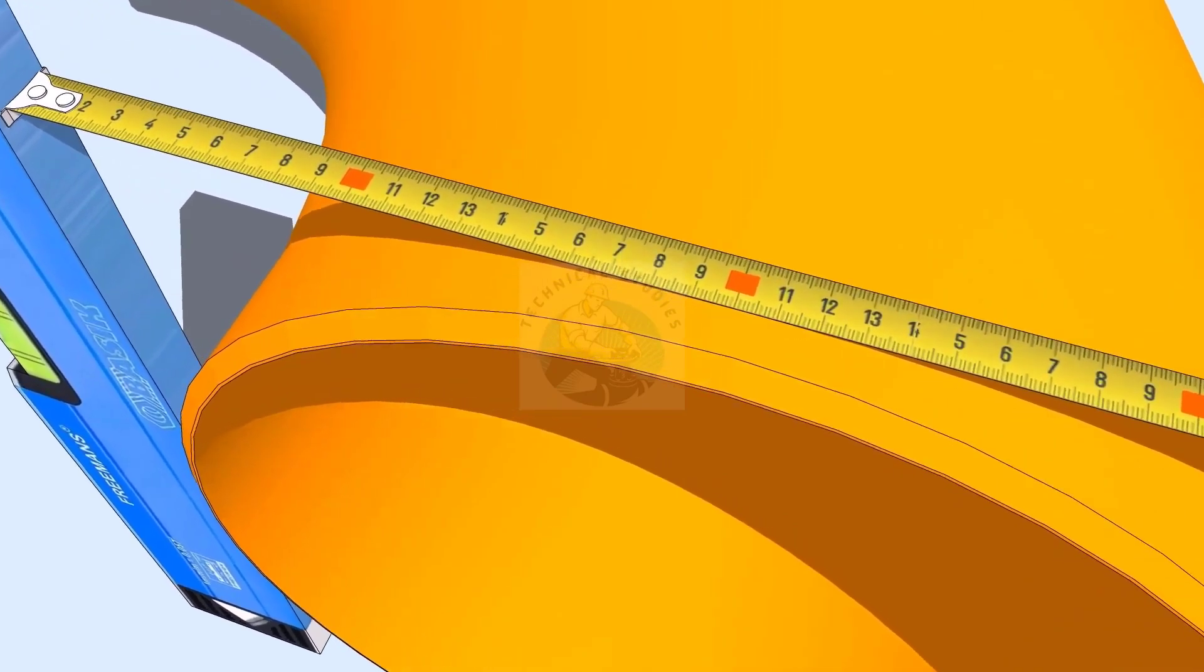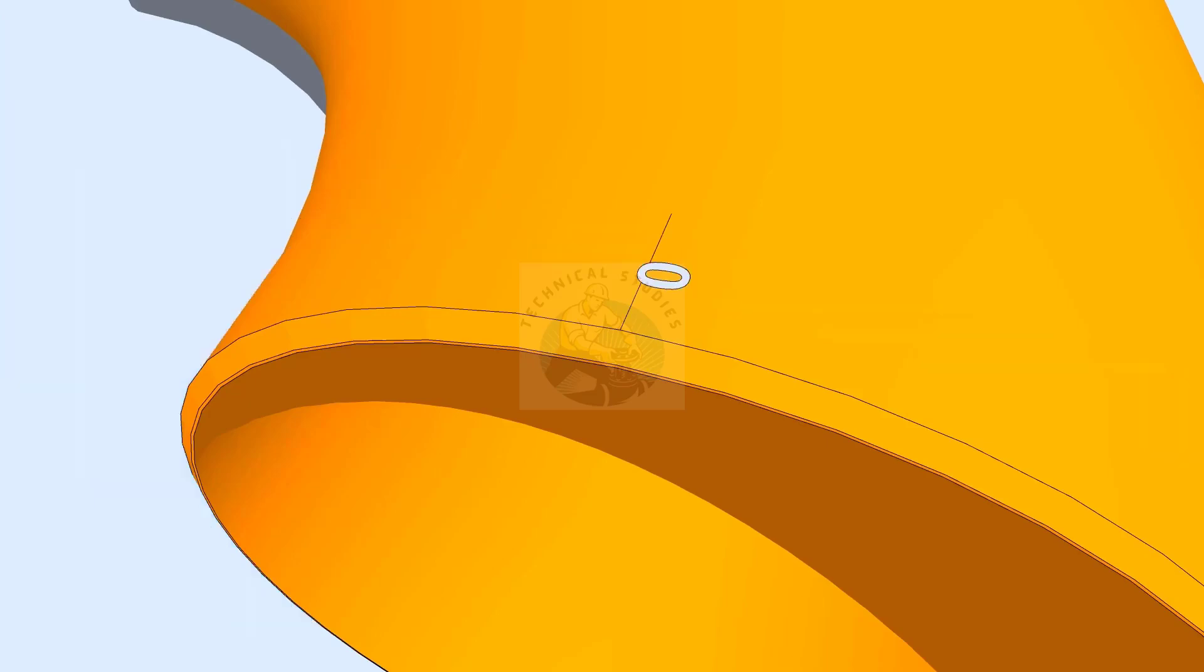Now, hold the level bottle on the opposite side and cross-check the center. Mark this line as 0.